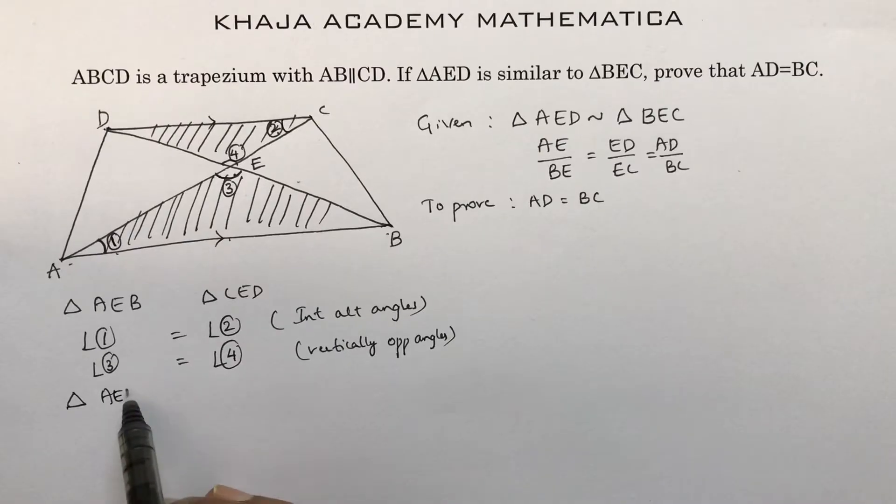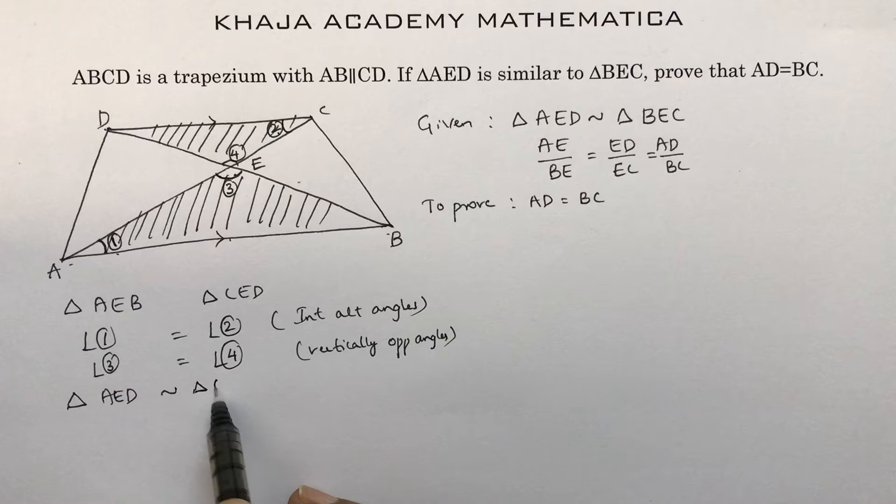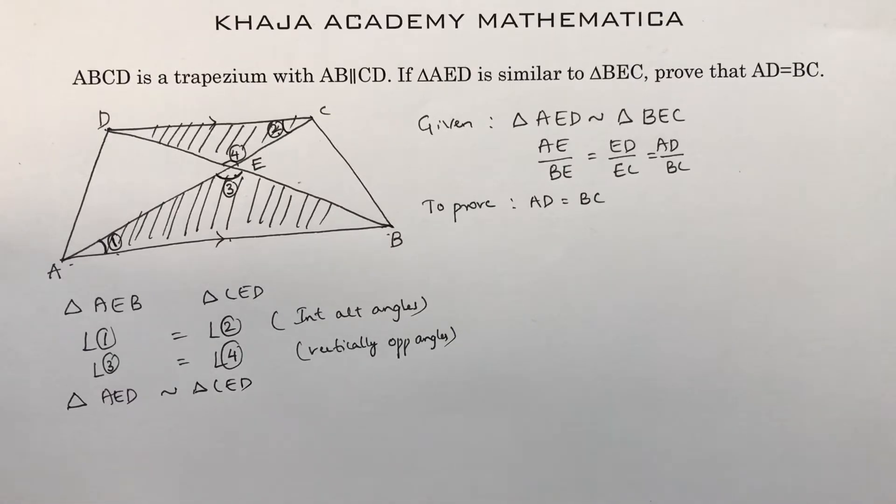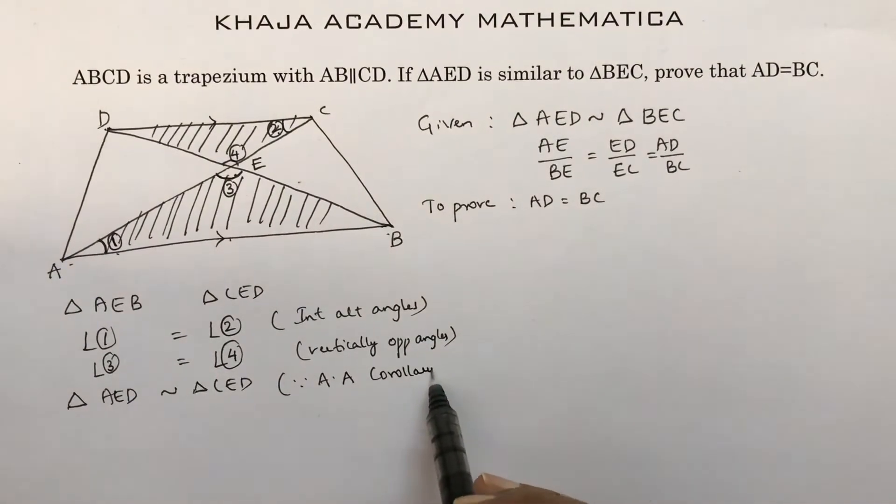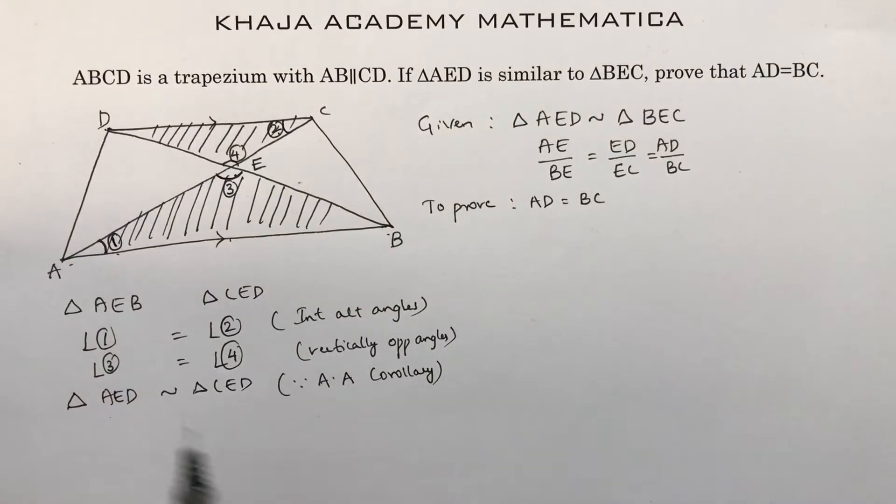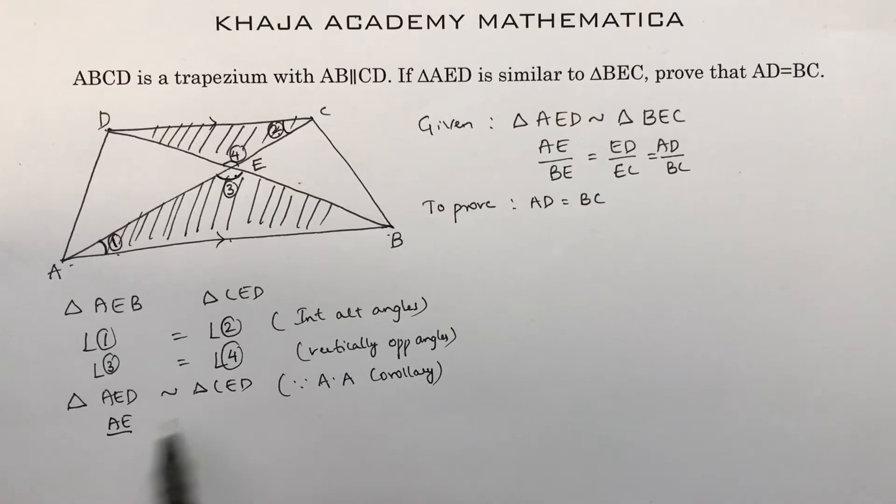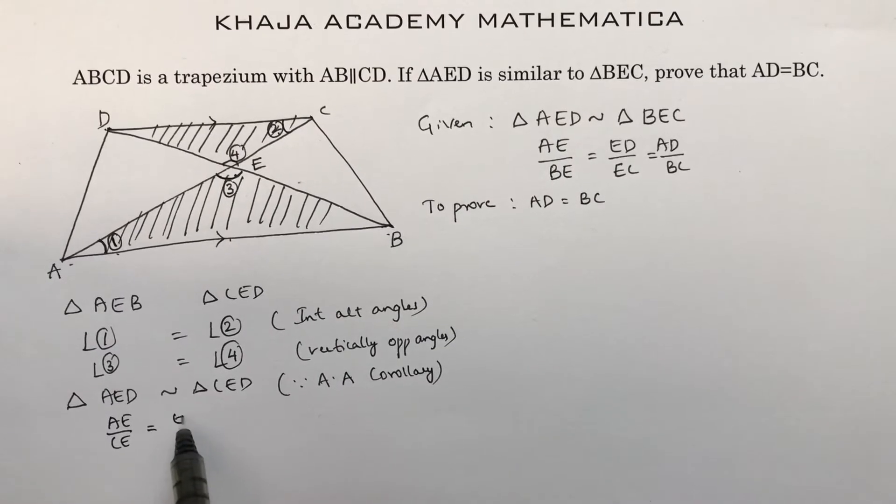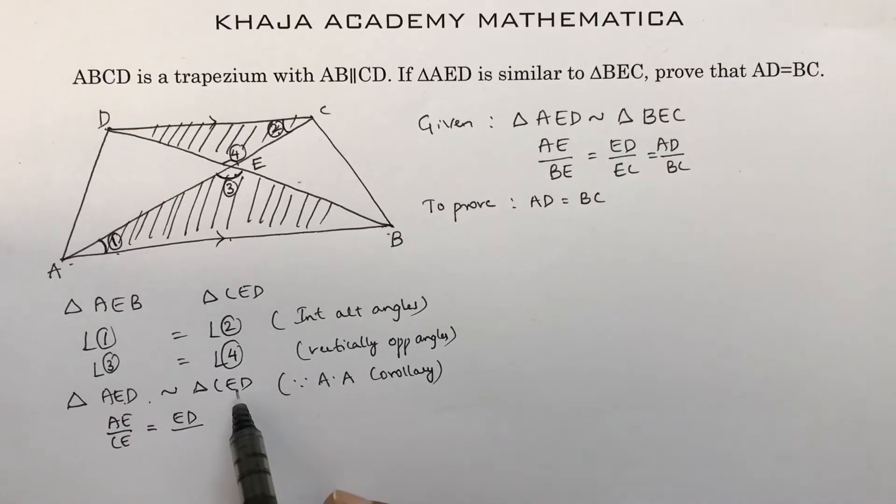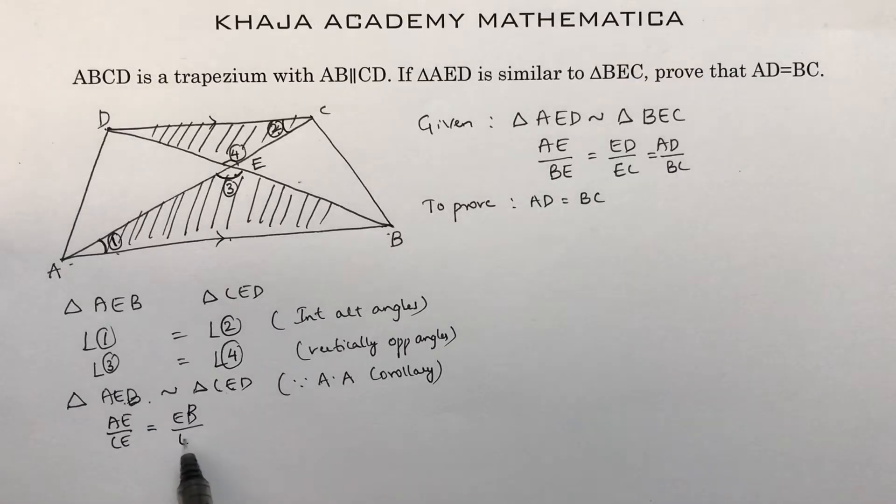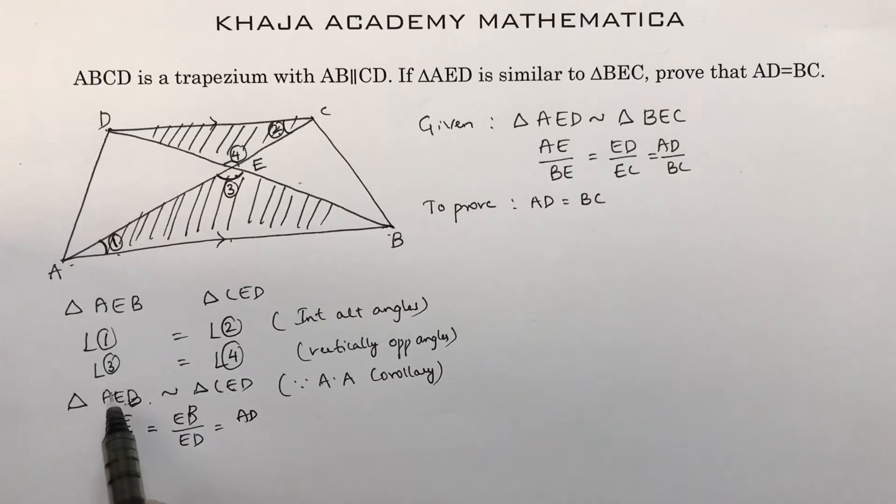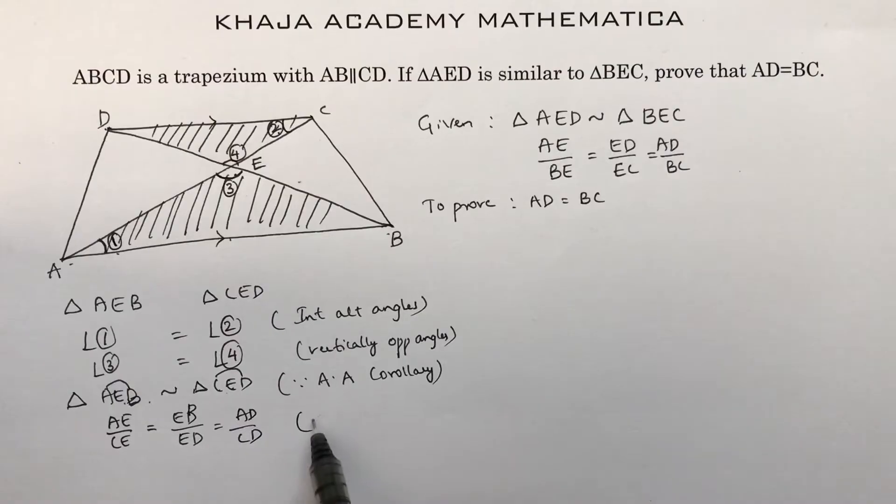So triangle AEB is similar to triangle CED by angle-angle corollary. If these two triangles are similar, we can write sides proportional: AE by CE equals EB by ED and AB by CD. We can write CPST, corresponding parts of similar triangles.